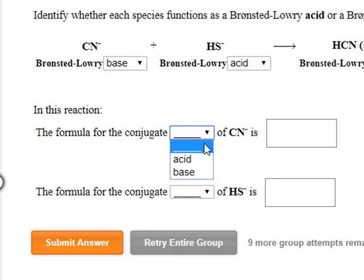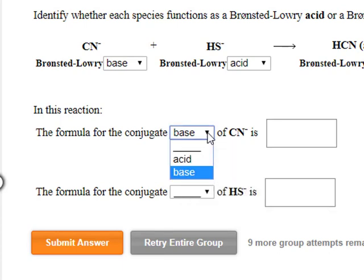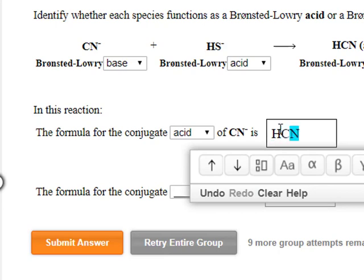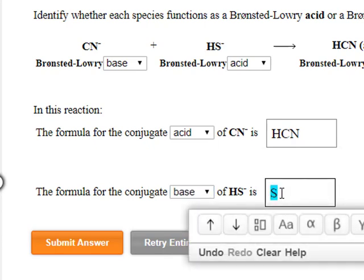The formula for the conjugate base of cyanide is HCN, and then the formula for the conjugate base is sulfide.